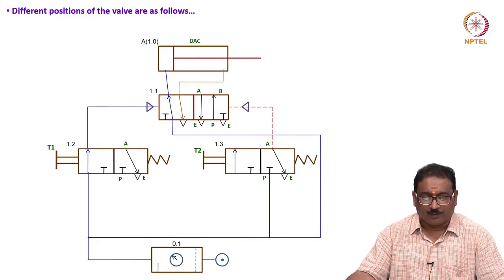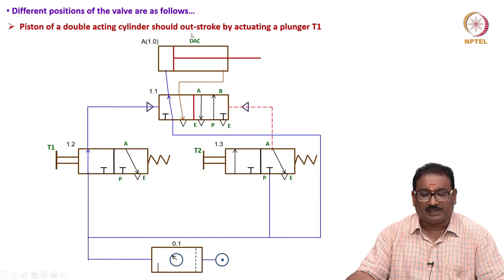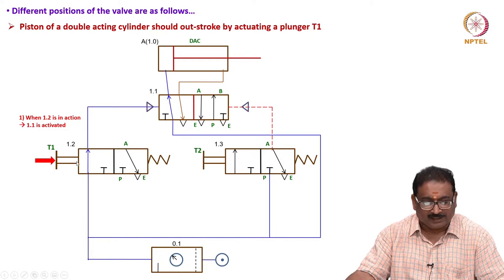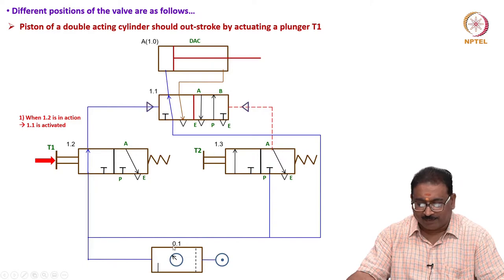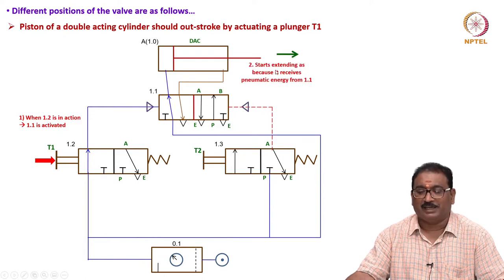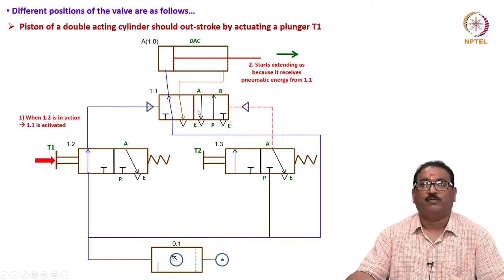How will it operate? I will show you the different positions. When the piston of a double-acting cylinder should outstroke by actuating plunger T1 - if you press T1, the signal will come here, the energy will come here, enter the head side, and it will extend, start extending, because it receives pneumatic energy from 1.1.